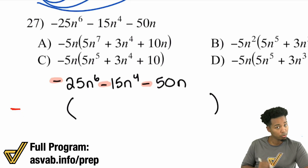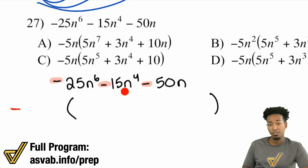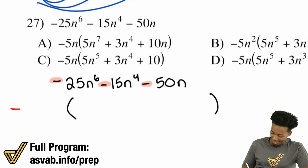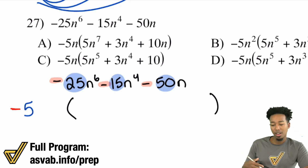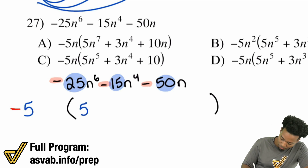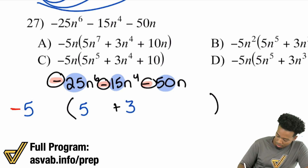Next up, the numbers. 25, 15, and 50. What do they all share? Well, 25 is 5 times 5, 15 is 5 times 3, and 50 is 5 times 10. They all share a 5. So I'm more than happy to take out a 5, divide out a 5 from each of these. Because once I divide out the 5, well, 25 divided by 5 is 5. This is going to be plus because all of these got changed once I factor out the negative. 15 divided by 5 is 3. And then that's a plus for the 50 — 50 divided by 5 is 10.